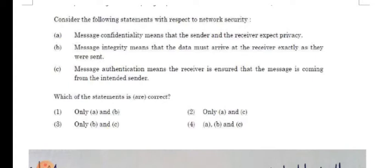Consider the following statements with respect to network security. Message confidentiality means that the sender and the receiver expect privacy. Message integrity means that the data must arrive at the receiver exactly as they were sent. Message authentication means the receiver is ensured that the message is coming from the intended sender.